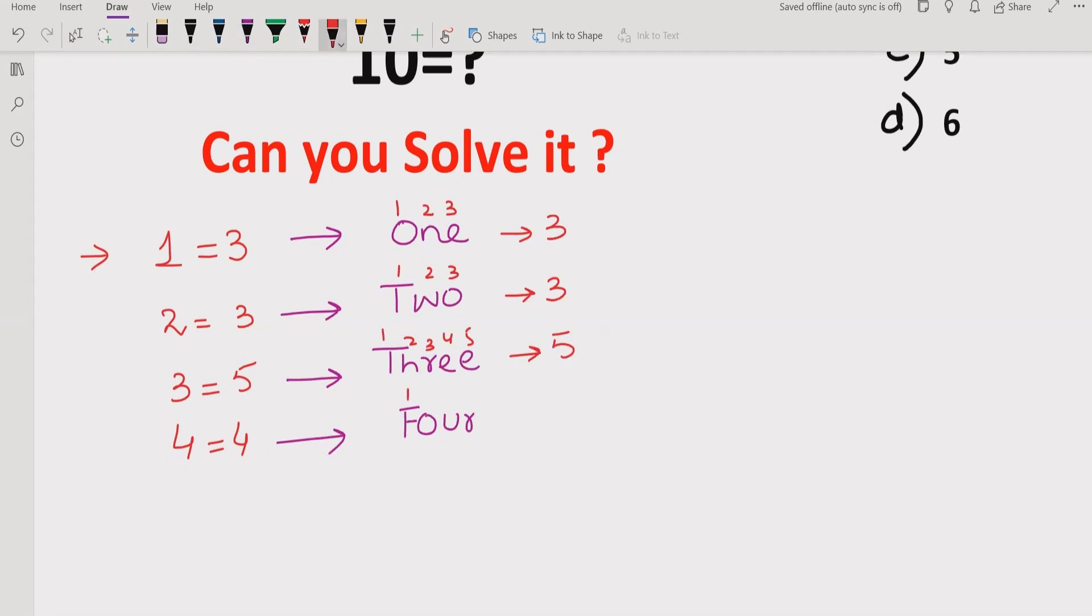Now let's see the 10 number which is unknown right now. If we see 10, it's T-E-N, so if we count 1, 2, 3 letters.